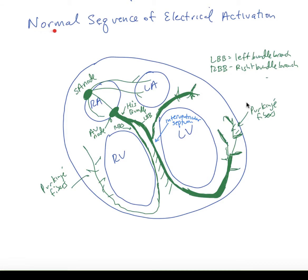Now we're going to talk about the normal sequence of electrical activation within the heart. Notice we have the SA node, the sinoatrial node, located high up in the right atrium. It is the pacemaker.